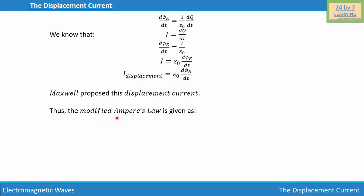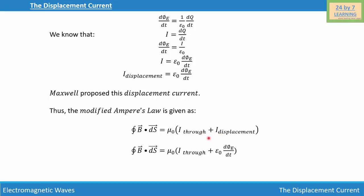The modified Ampere's Law is given as the integration of B dot dS equals mu-zero times the quantity I-through plus I-displacement. Substituting, the integration of B dot dS equals mu-zero times open bracket I-through plus epsilon-zero times d-phi-E over dT close bracket. This is known as the Ampere-Maxwell Law, and this is how we define the displacement current.